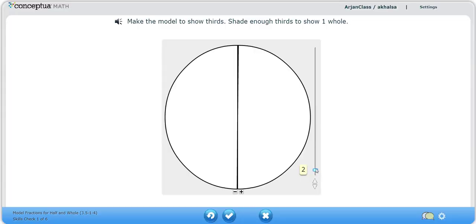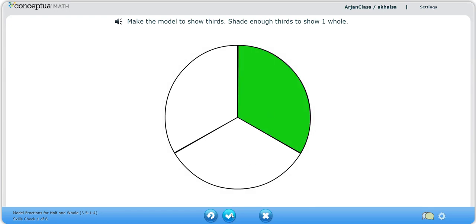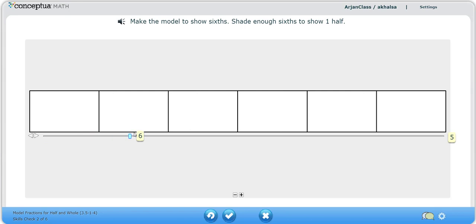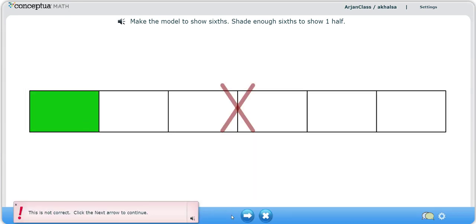In this example, we'll show the student answering a question incorrectly. They're supposed to show three-thirds and they get the question wrong. Here they're supposed to show three-sixths, enough sixths to show one half, but they get it wrong. So they got the first two wrong, we'll get the rest of them right and then we'll see how the video continues.